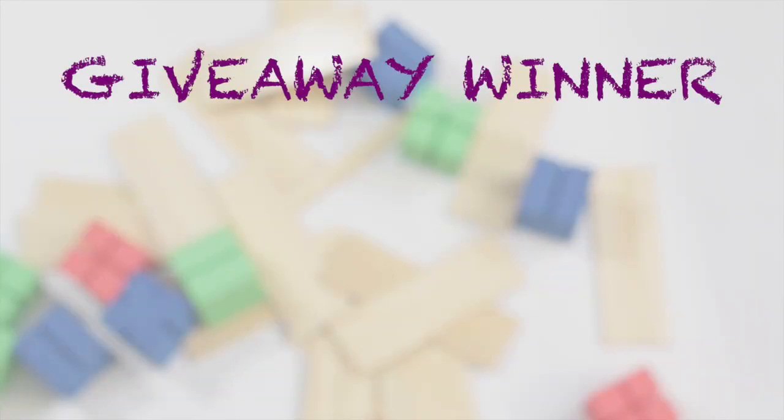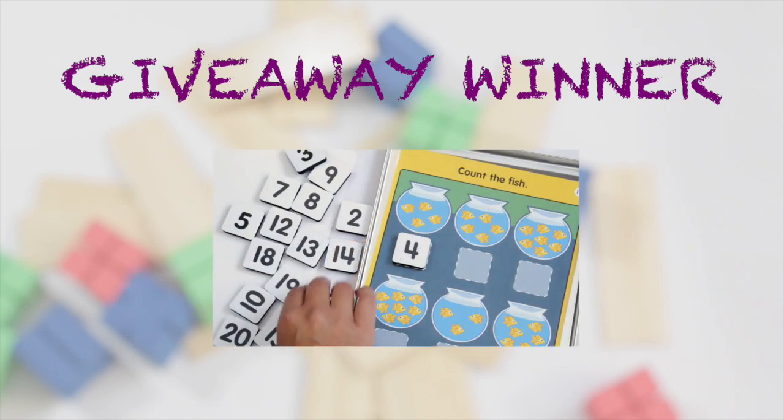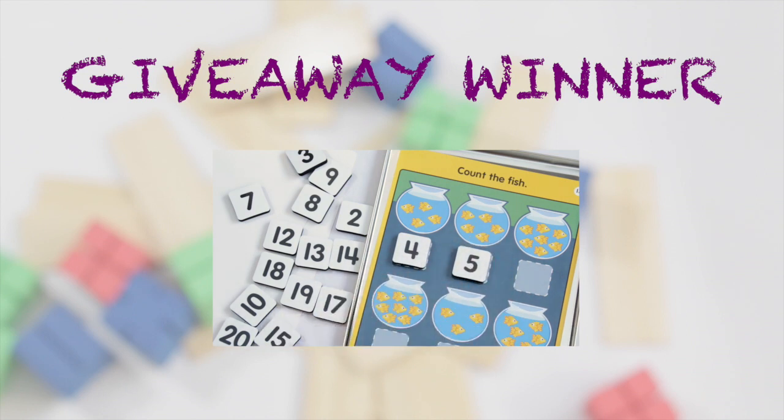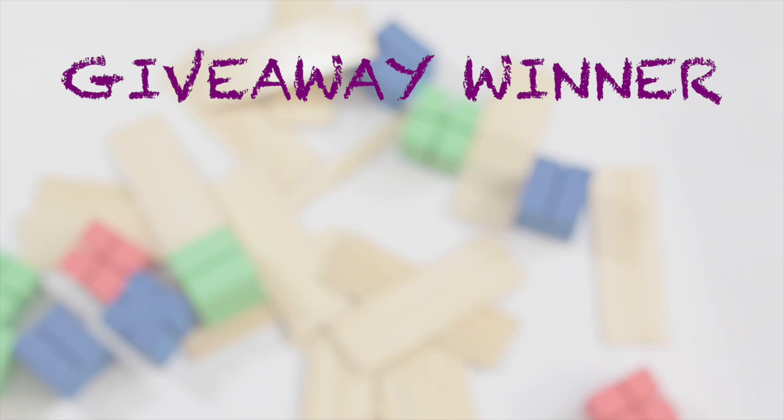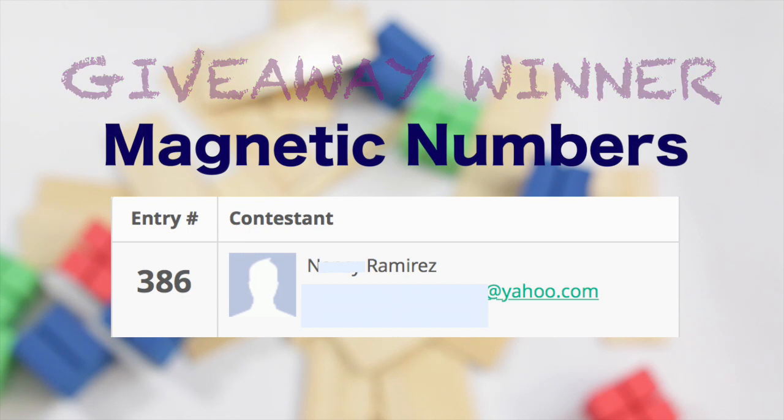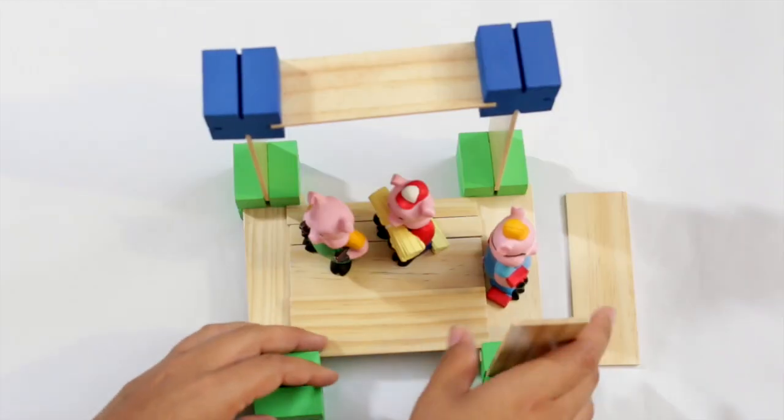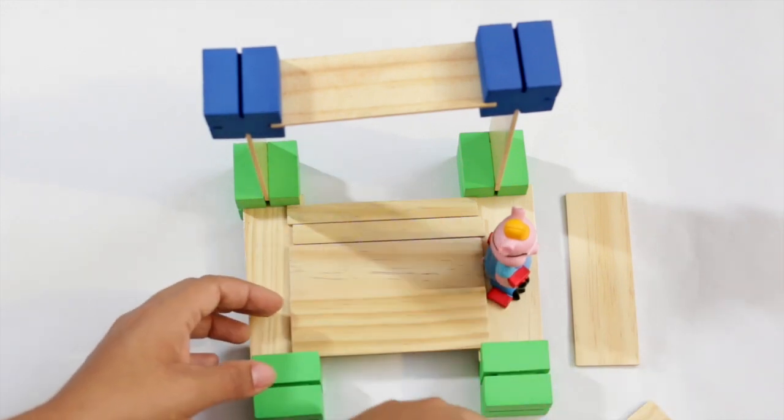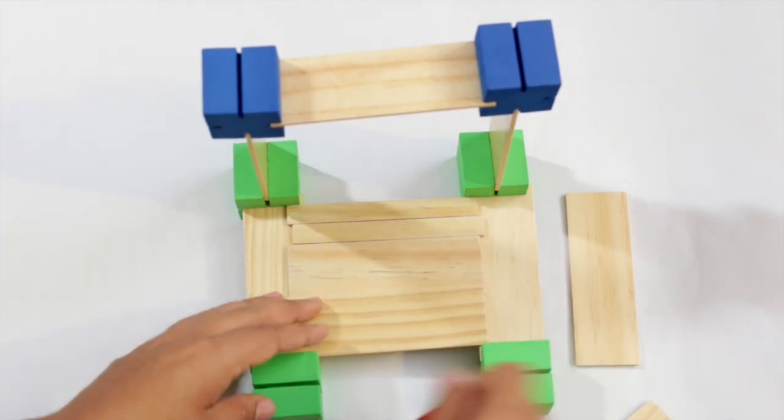Last week we had a video where I showed you the Magnetic Alphabet Tin from Lakeshore Learning. And everybody loved it. And Lakeshore wanted to give one away. And so that winner is, here's the name. I'll be contacting you for your email address. And Lakeshore Learning will be sending you your tin directly. Thanks for participating in my giveaway. Give me a thumbs up to show your love. Click subscribe if you haven't already to see more videos like this. And I'll see you next time.